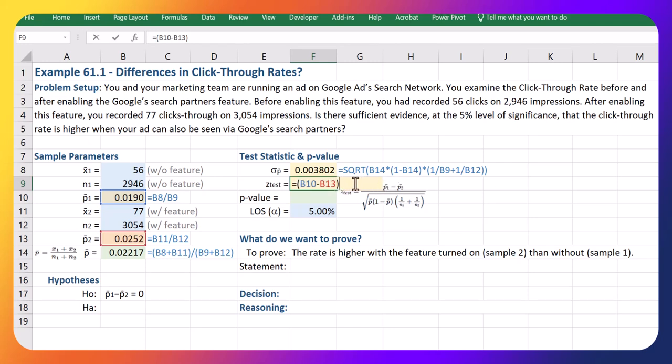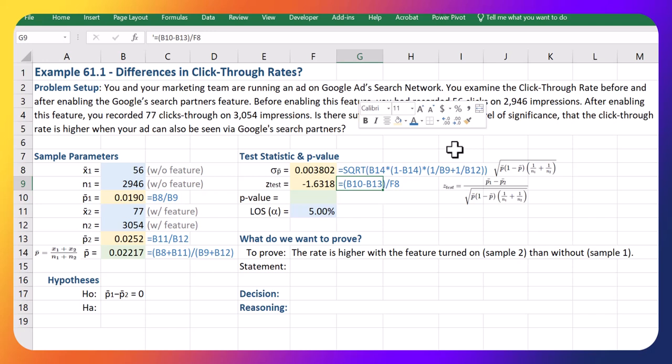So now we just take p1 minus p2, put brackets around that—we want this whole thing on the top—and then divide that by this piece, which we just calculated as 0.0038. That gives us negative 1.6318. I'll just show that formula as well.